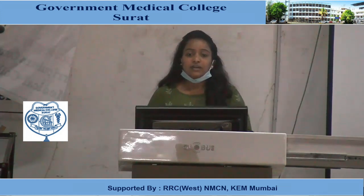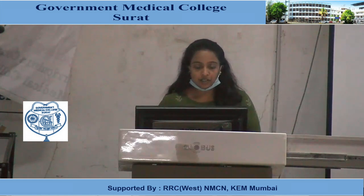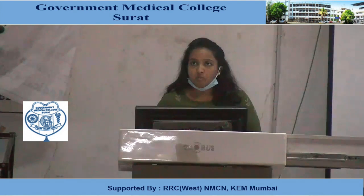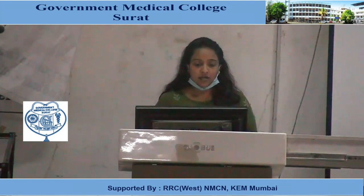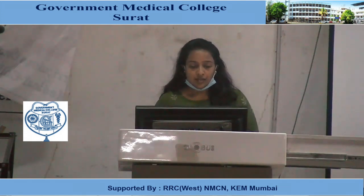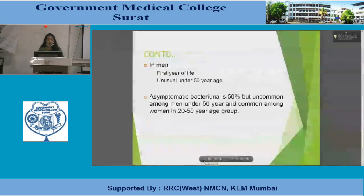Epidemiology is subdivided into catheter-associated (nosocomial) and non-catheter (community-acquired) infection. Acute community-acquired urinary tract infections are very common compared to nosocomial. In women, UTI is common in 1–3% of school girls and increases markedly with the onset of sexual activity. In men, it is seen in the first year of life and unusual under 50 years of age.